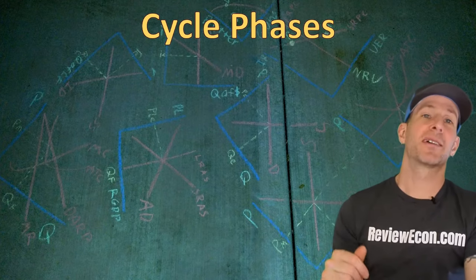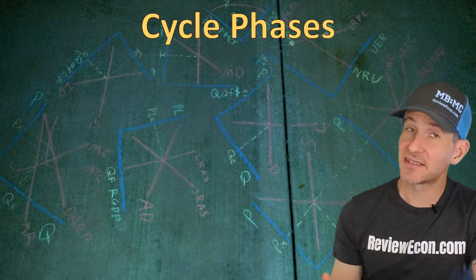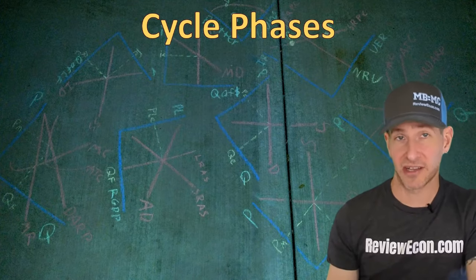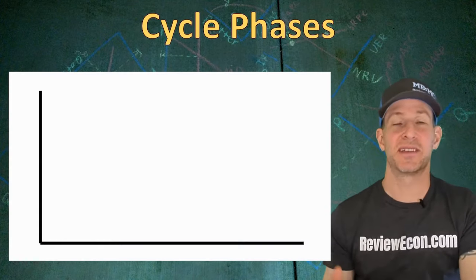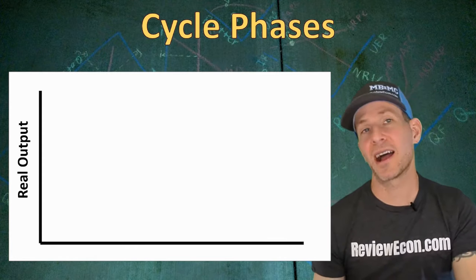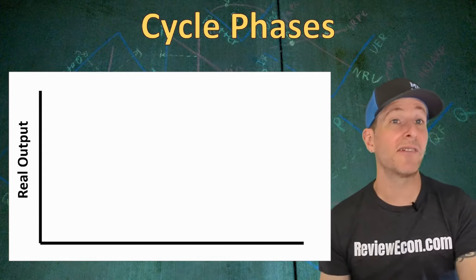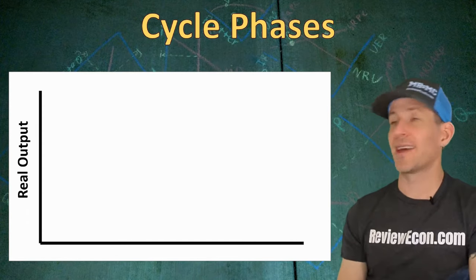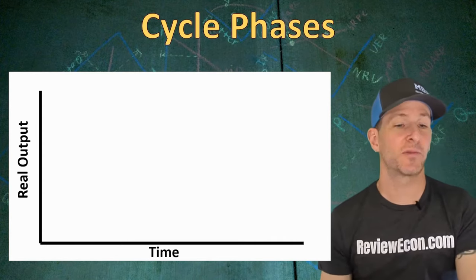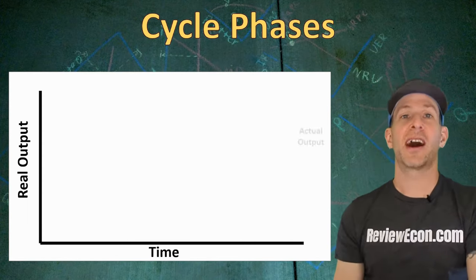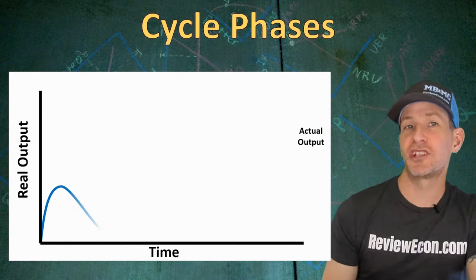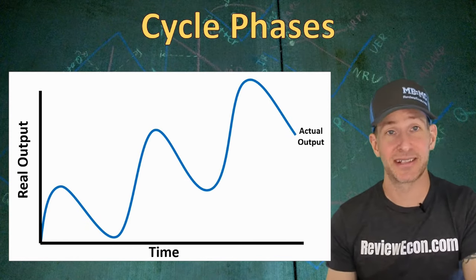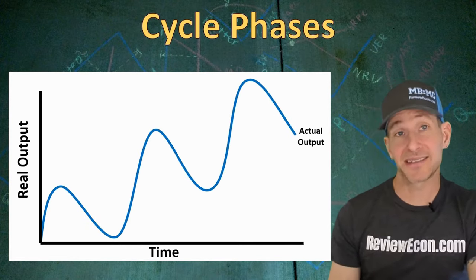Next, we're going to talk about the business cycle — the natural ups and downs that you get within a market-based economy. On the graph illustrating the business cycle, the y-axis shows real output, usually measured with GDP, and the x-axis shows time. Over time, our actual GDP will increase, decrease, increase, and decrease again. That's the business cycle.